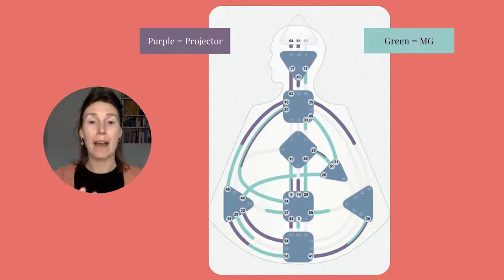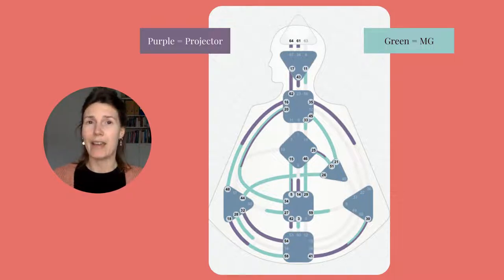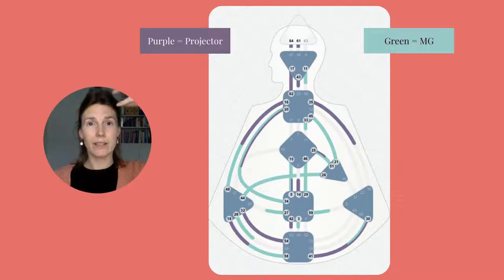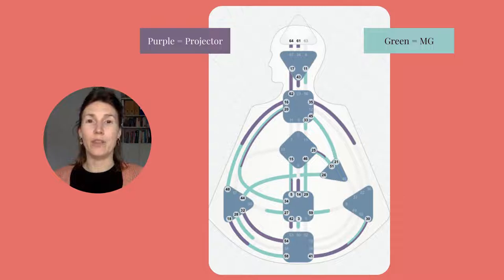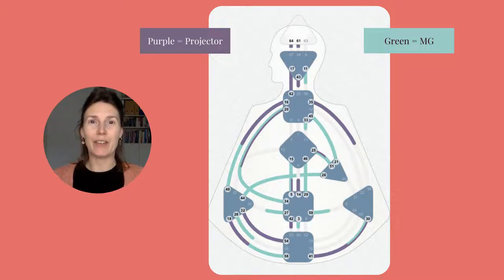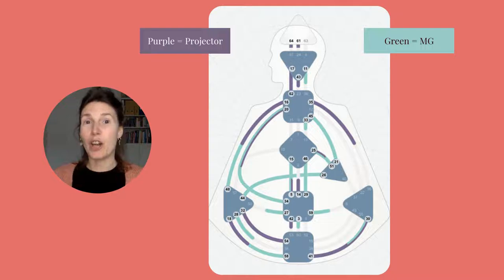In this case, her split is bridged by my gate 48. So she could experience a sense of wholeness because I bring the energy of gate 48 — she is able to connect her mental activity to the rest of her design, the splenic connection, the root, and the solar plexus. That can bring a feeling of wholeness and clarity, because she is able to express that intuition and energy coming from her root and solar plexus. There's a lot happening here.